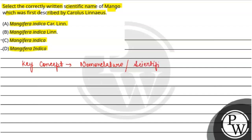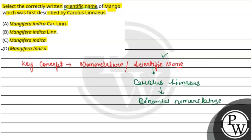Now let's understand scientific names. Every living organism has a common name, but what is used formally is the scientific name. The scientist who gave us binomial nomenclature was Carolus Linnaeus. Carolus Linnaeus gave the system of binomial nomenclature upon which scientific names are based.